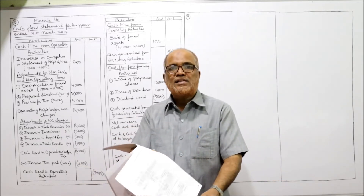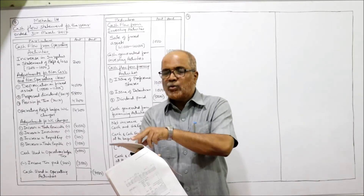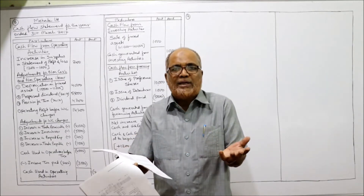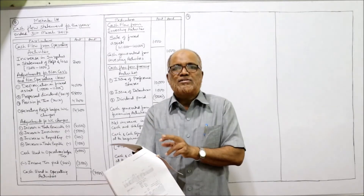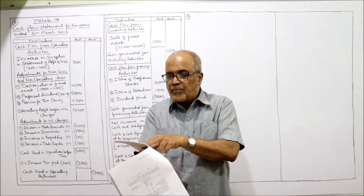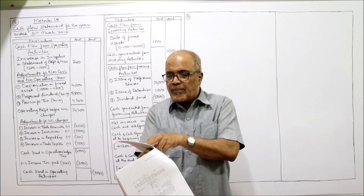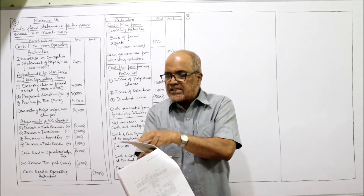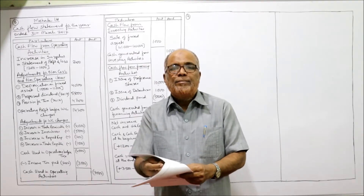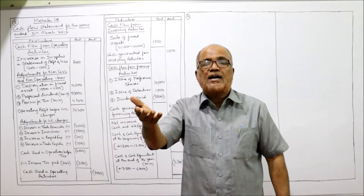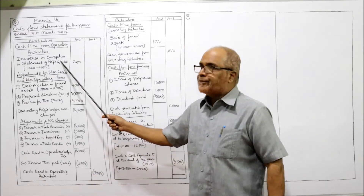In reserves and surplus: general reserve last year 2,000, current year 2,000 — no change, ignore it. Surplus in profit and loss account: last year 1,000, current year 1,200. That means the surplus has increased by 200. Now our starting point for the Meheka Limited cash flow statement for the year ended 31st March 2017 is: increase in surplus in the statement of profit and loss is 1,200 minus 1,000 equals 200.